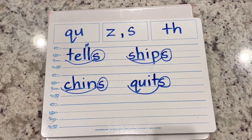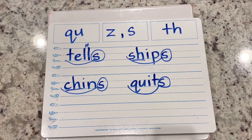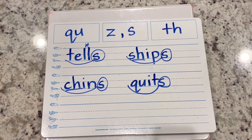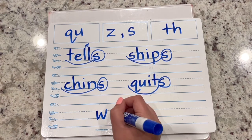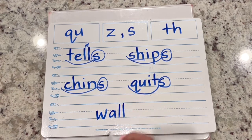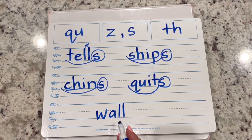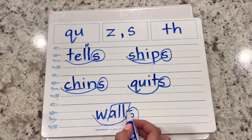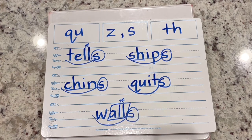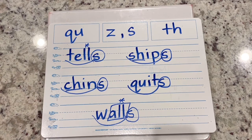Write the word walls. The base word is wall: W-ALL. I know ALL is the glued sound A-L-L - like in ball. What do I add to make it say walls? The suffix S. Scoop your base word, circle your suffix. You can put a box around your glued sound and a star over your bonus letter. Pause this video if you need more time.